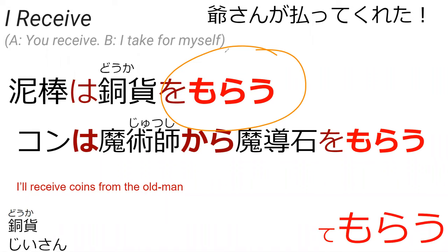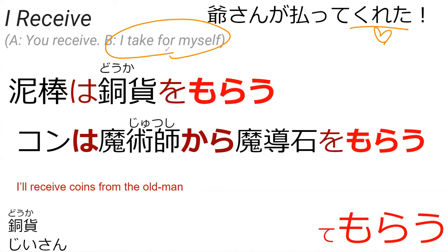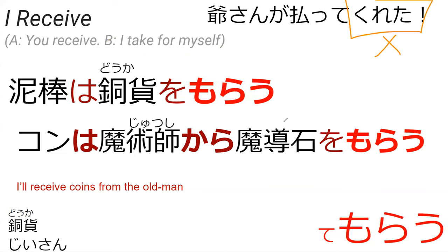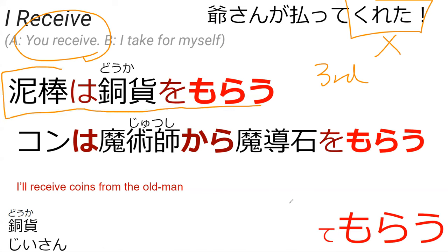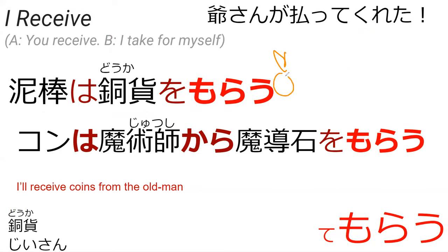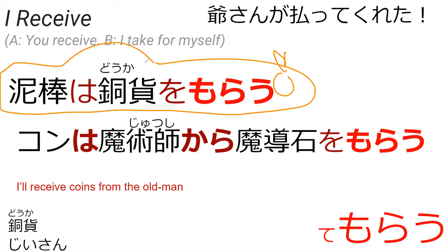So morau is something that I feel really confuses people, because a lot of times they teach morau at the same time as kureru and ageru, since they're in that same receiving/giving bubble of weird Japanese. The difference is that kureru is used when you're talking about yourself — kureru means oh I'm so happy this happened, thank you. If I morau, that means you kind of took it for yourself. You shouldn't really use morau for yourself. However, you cannot use kureru for others — you can't do third-person kureru. So instead you have to use third-person morau if you want to say someone else received something. For example: dorobo wa douka o morau — the thief received coins — and that's really the only way you could say this.